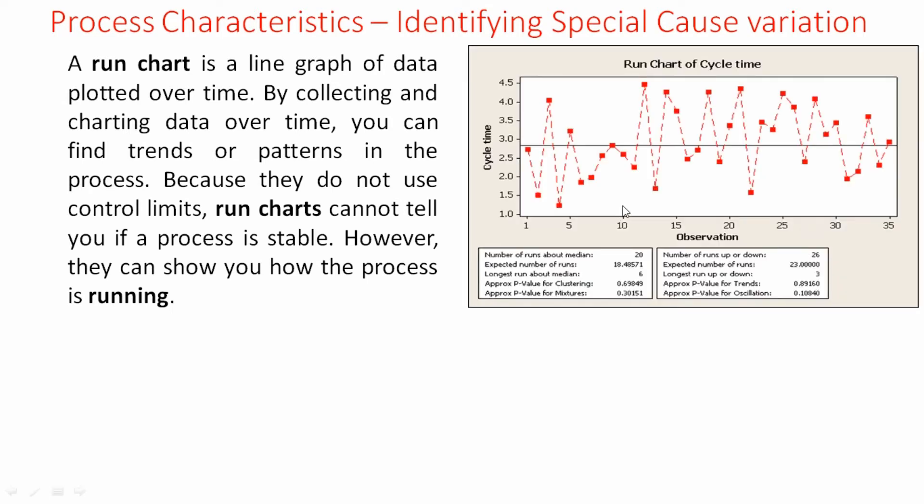If you look at this graph, this is a run chart. I have plotted cycle time here. As a green belt or a black belt you need to look at four p-values. So these are clustering, mixtures, trends and oscillations. Let us understand them one by one.